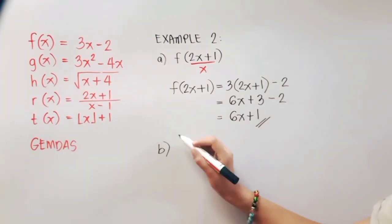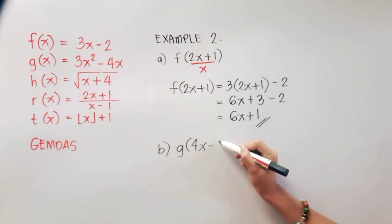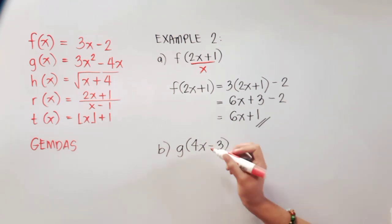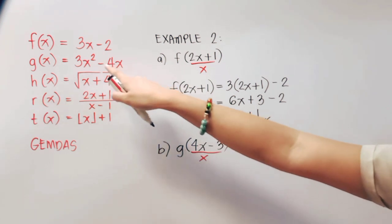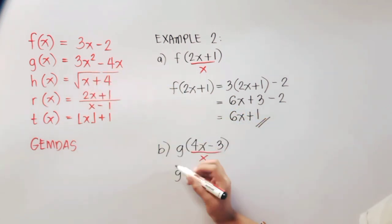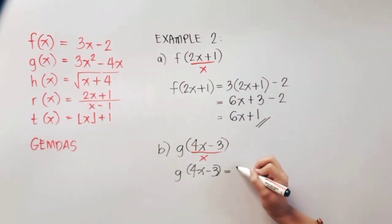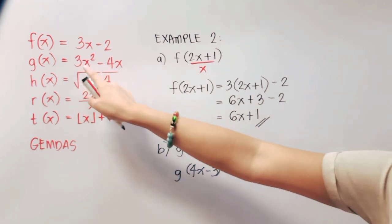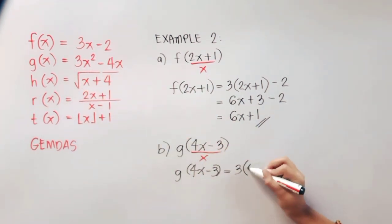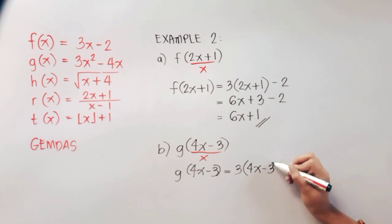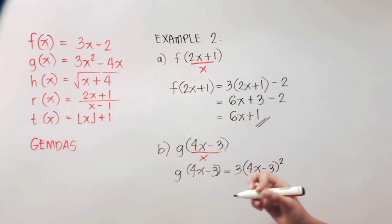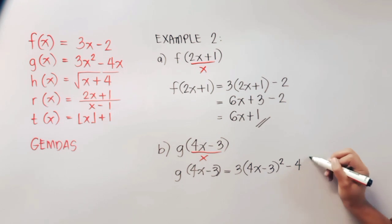Let us now proceed to letter B with a given g of 4x minus 3. Again, this entire thing here will be our x. So we will substitute this one to our function g. Let's copy first. And this is equal to, copy 3, and then x is now substituted by 4x minus 3 quantity squared, and then copy minus 4 times, again that's 4x minus 3.